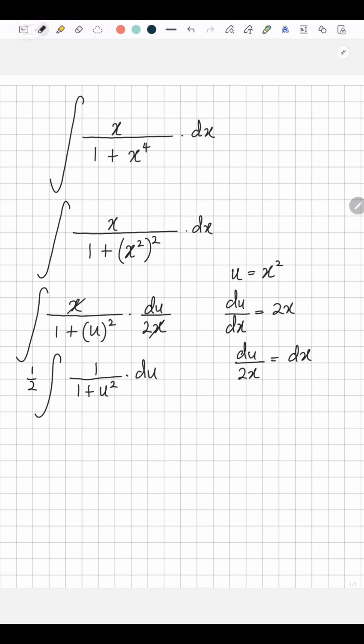And the integration of 1 over 1 plus u squared is easy. That's tan inverse u. So you multiply that by half and add c. So your final answer is going to be half tan inverse x squared plus c.